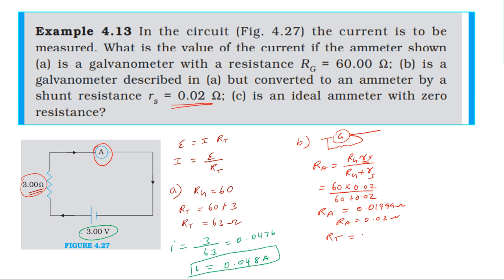The calculation gives 0.01999 ohm. The total resistance is 3 plus 0.02, which equals 3.02 ohm. The current equals EMF of 3 divided by 3.02.